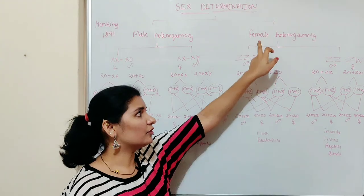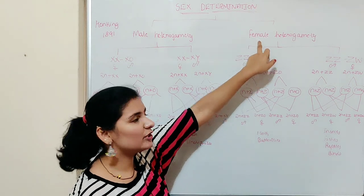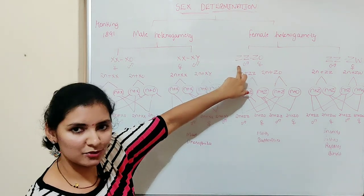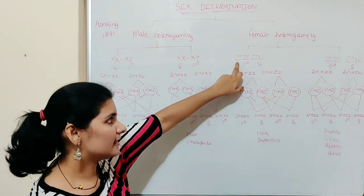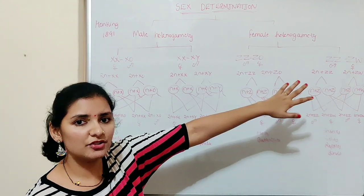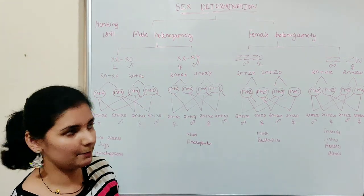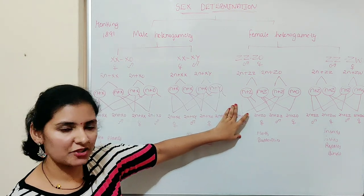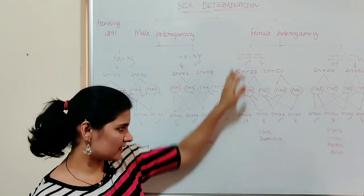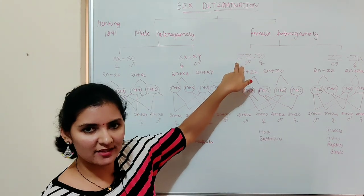Now let me discuss female heterogamety — where it is the female individual which produces two different types of gametes. Under female heterogamety there are two types: ZZ/Z0 type and ZZ/ZW type. The alphabets Z and W are used just to differentiate these from the XX/X0 and XX/XY types. ZZ/Z0 sex determination is seen in some moths and butterflies.